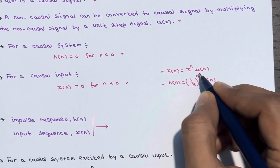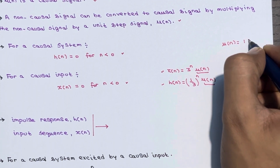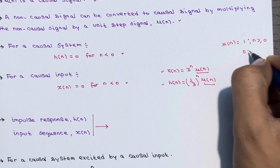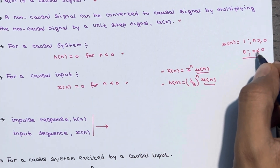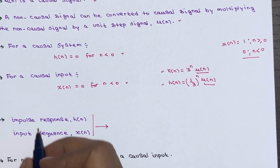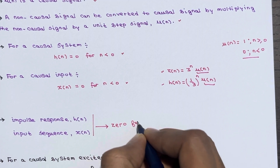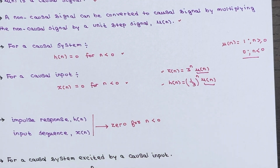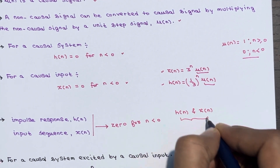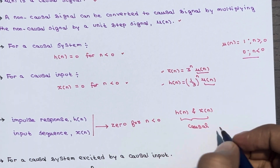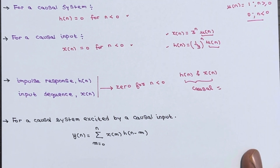If you see both h(n) and x(n), they are each multiplied by u(n). Since u(n) = 1 when n ≥ 0 and 0 when n < 0, both signals are zero for n < 0. So both h(n) and x(n) are causal in nature. Now, which formula do we apply?